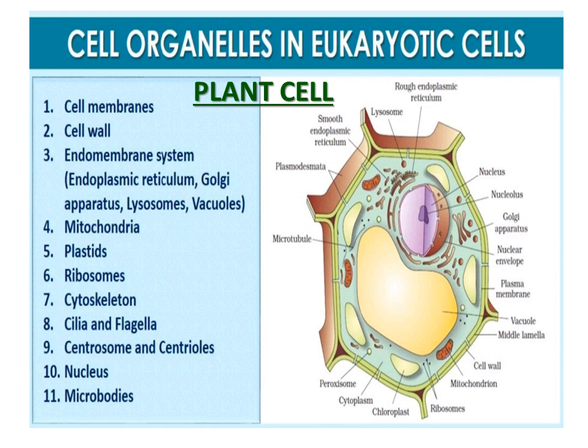Plant cell: A plant cell consists of a cell membrane, cell wall, and endomembrane systems. Cell organelles include endoplasmic reticulum, Golgi apparatus, lysosome, vacuole, mitochondria, plastids, ribosomes, and cytoskeleton. Cilia, flagellum, centrosomes, and centrioles are absent. Also present are nucleus and microbodies.